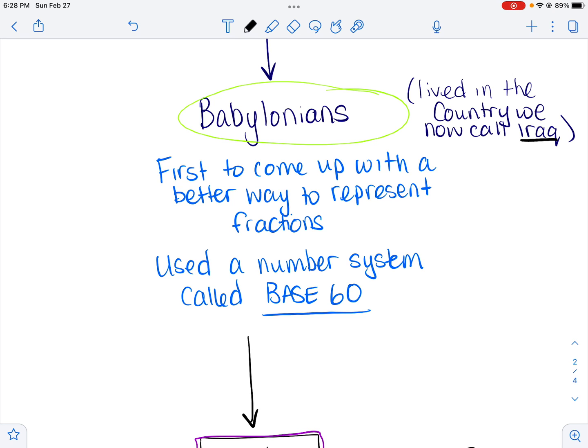But they had a better way to represent their fractions, but they used a different number system than the Egyptians. They used a base 60 number system, which is a little bit more complicated. We used base 60 for things like time and angles.